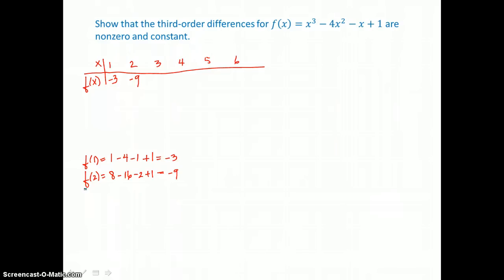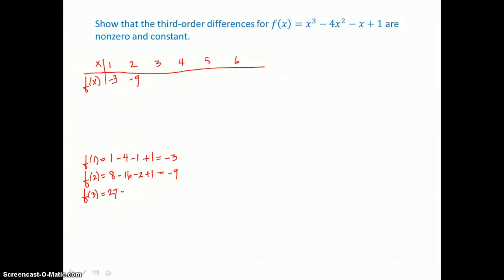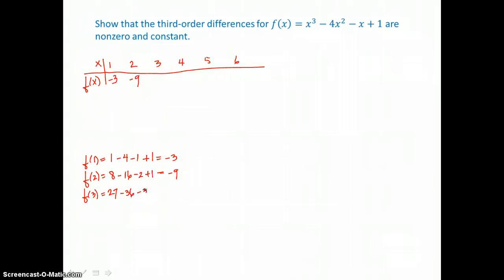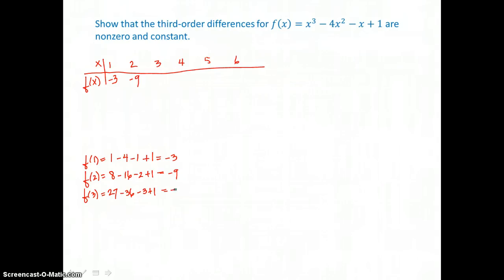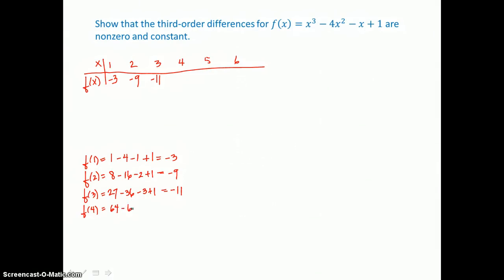My third function value, f of 3: 3 cubed is 27, 3 squared is 9 and 9 times negative 4 is negative 36, minus 3 plus 1, so that's negative 11. Fourth function value: 4 cubed is 64, and 4 squared is 16 times negative 4 is negative 64, minus 4 plus 1, so I'm getting negative 3.